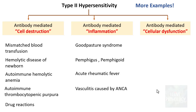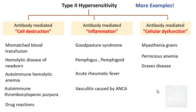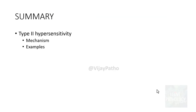For antibody mediated cellular dysfunction: myasthenia gravis we have already discussed. In pernicious anemia, antibodies are against the intrinsic factor or against the gastric parietal cells, with manifestations including megaloblastic anemia and neurological symptoms due to vitamin B12 deficiency. In Graves disease, antibodies are against the thyroid stimulating hormone receptor, with symptoms of hyperthyroidism including weight loss, heat intolerance, and exophthalmos.